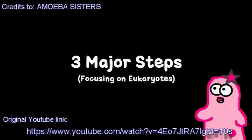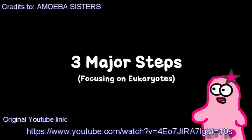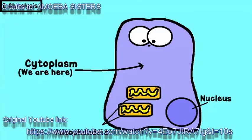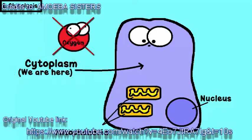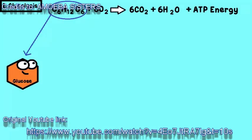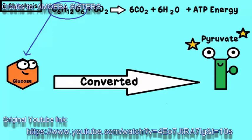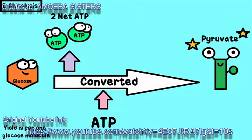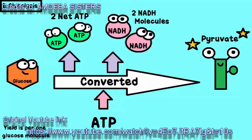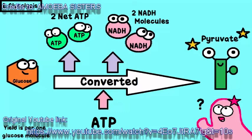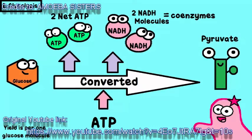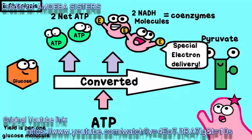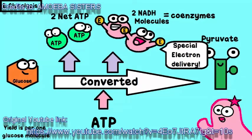Cellular respiration involves three major steps. We are going to assume that we are starting with one glucose molecule so that you can see what is produced. Number one: glycolysis. This first step takes place in the cytoplasm, and this step does not require any oxygen. Glucose is converted into a more usable form called pyruvate. It actually takes a little bit of ATP energy itself to get this process started. The net yield from this step is approximately two ATP molecules and two NADH molecules. NADH is a coenzyme, and it has the ability to transfer electrons, which will be very useful in making even more ATP later on.